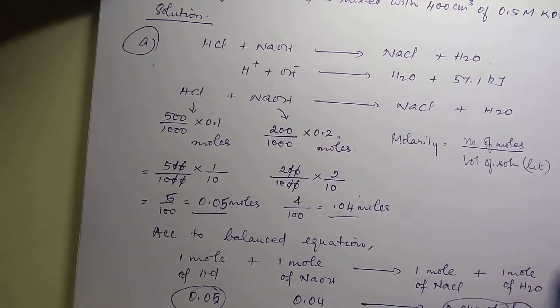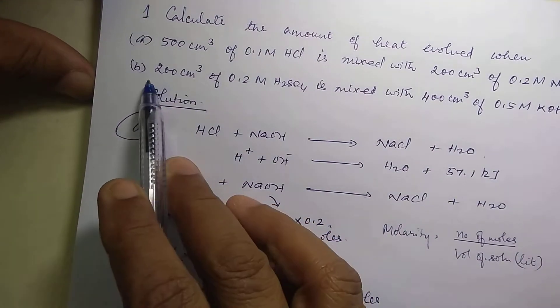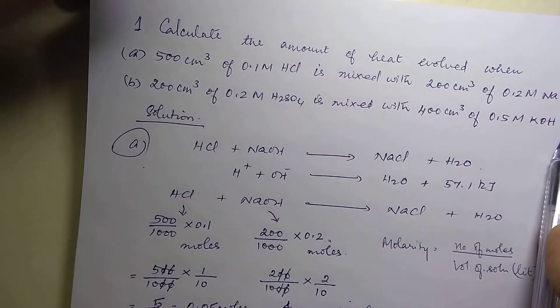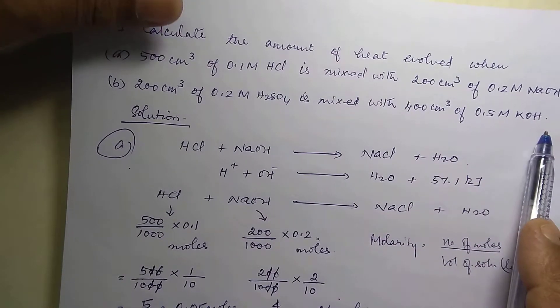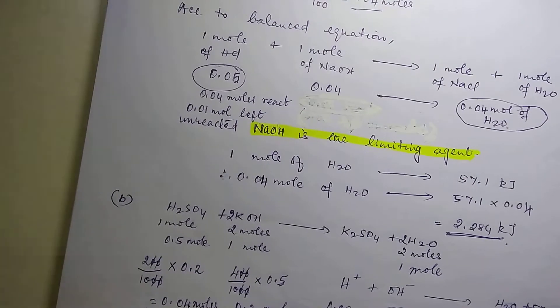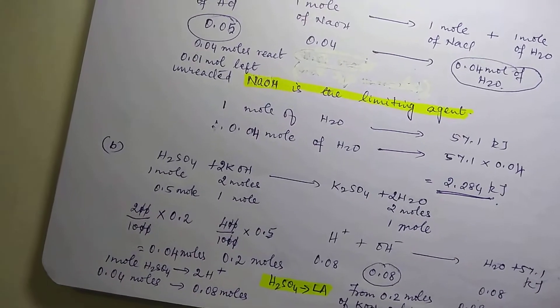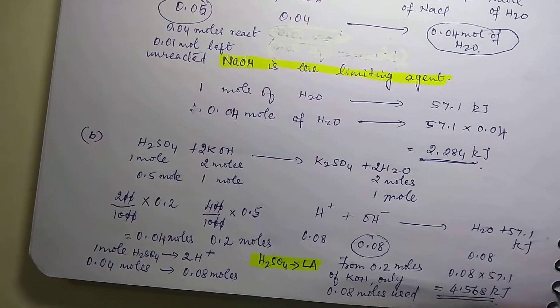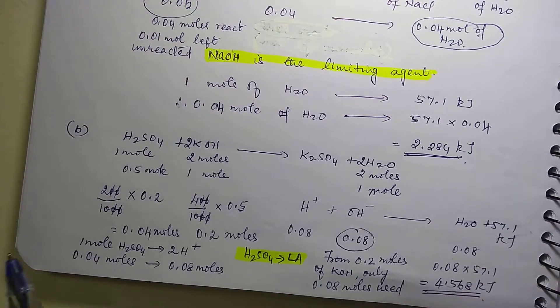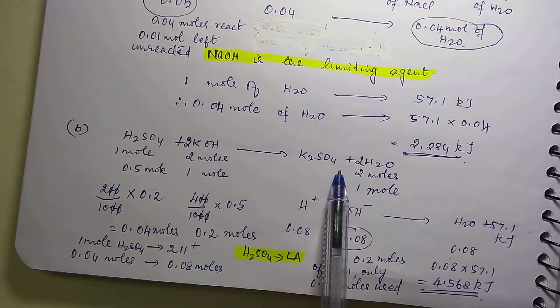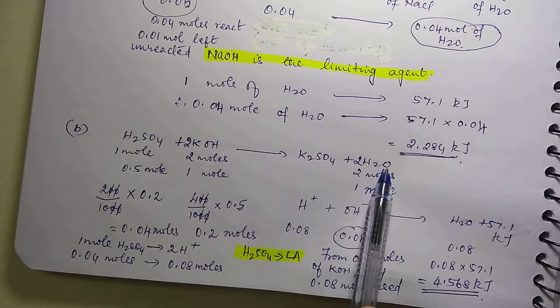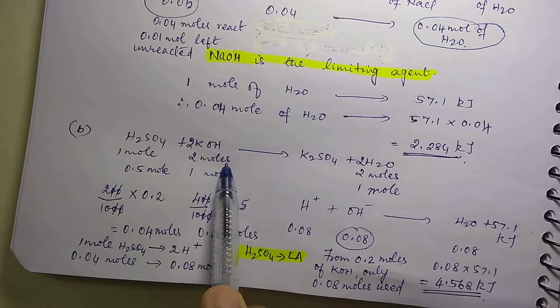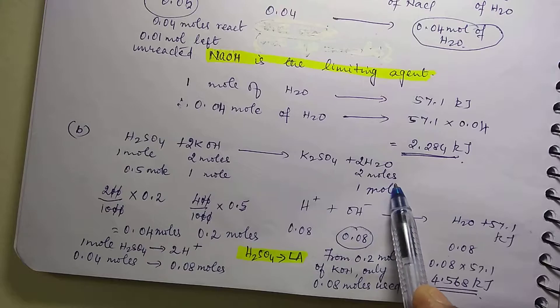Then the next question is, 200 cubic centimeter of 0.2 molar H2SO4 is mixed with 400 cubic centimeter of 0.5 molar KOH. Now H2SO4 plus 2KOH will give you K2SO4 plus 2H2O. This is the balanced equation. 1 mole of H2SO4 is reacting with 2 moles of KOH to produce 2 moles of water.